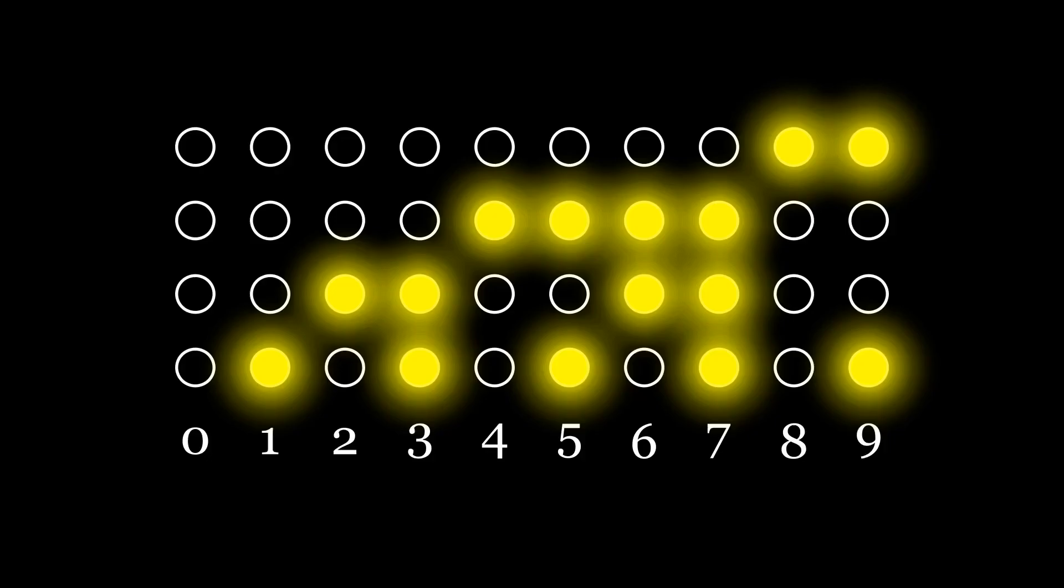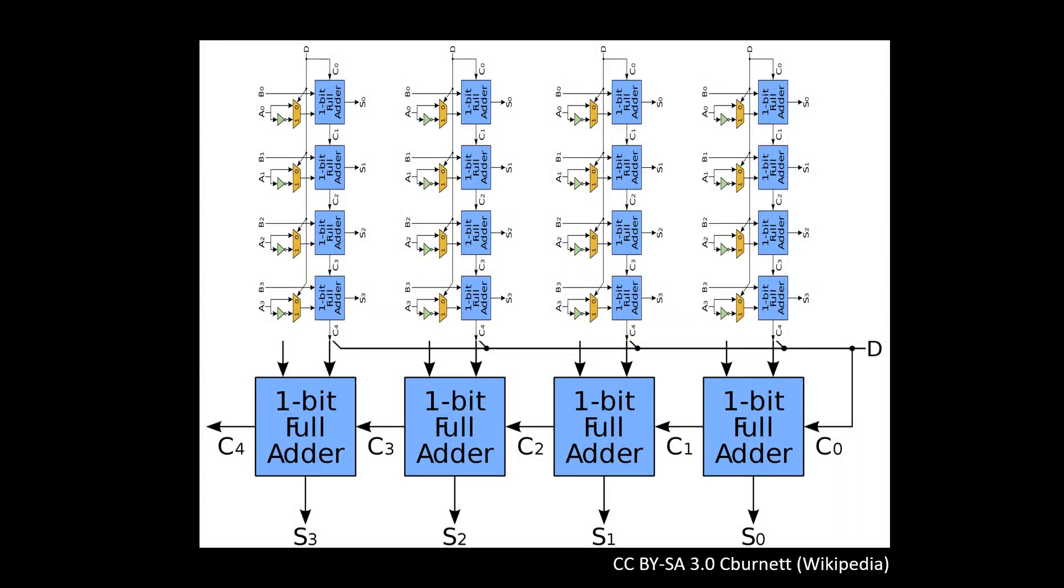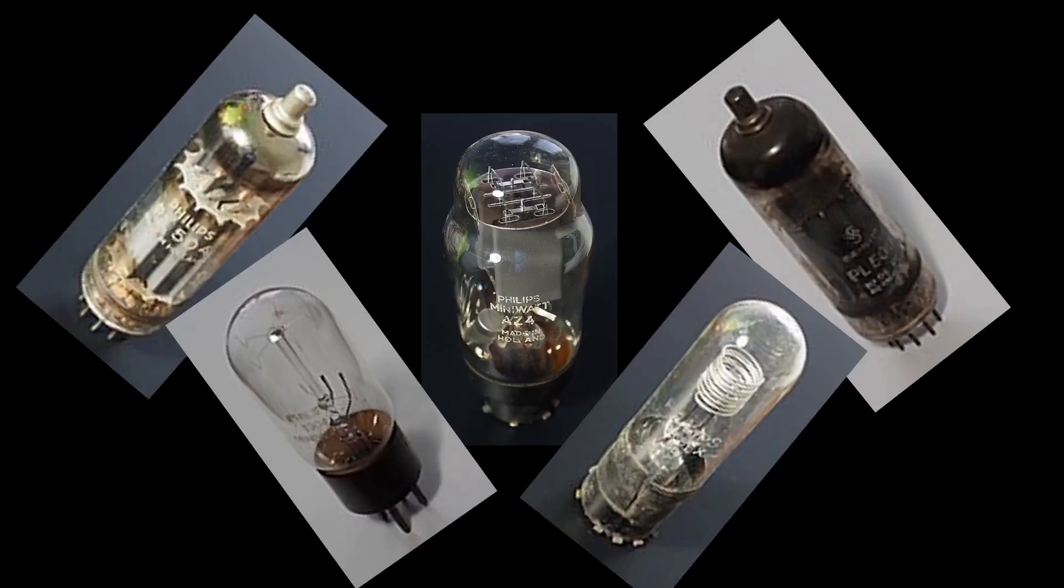And that might be okay for storing numbers. But for adding numbers, it gets complicated pretty fast. You need a carry adder within each digit, and another adder across the digits, and that means more vacuum tubes.